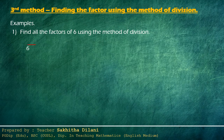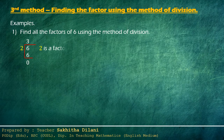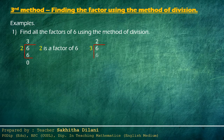Now let's divide six by two. You can see that when six is divided by two, it gives three and there is no remainder. So two is a factor of six. You know that six can be divided by three also. Then let's divide six by three. It gives two and there is no remainder. So three is a factor of six.